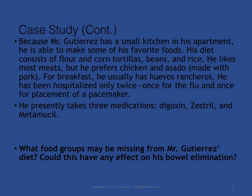Because Mr. Gutierrez has a small kitchen in his apartment, he is able to make some of his favorite foods. His diet consists of flour and corn tortillas, beans, and rice. He likes most meats, but prefers chicken and asado. For breakfast, he usually has huevos rancheros. Mr. Gutierrez has been hospitalized only twice — once for the flu and once for placement of a pacemaker. He presently takes three medications: digoxin, Zestril, and Metamucil. What food groups may be missing from Mr. Gutierrez's diet? Could this have any effect on his bowel elimination?